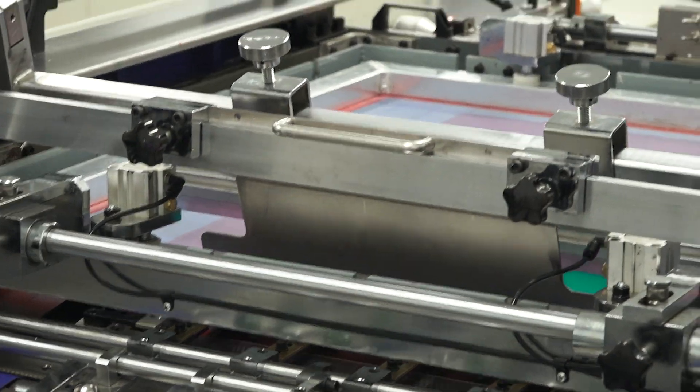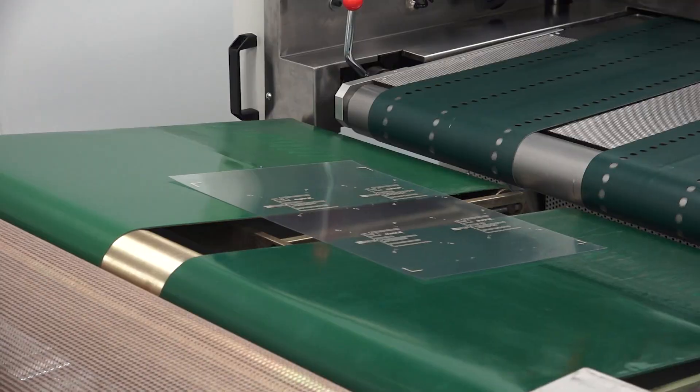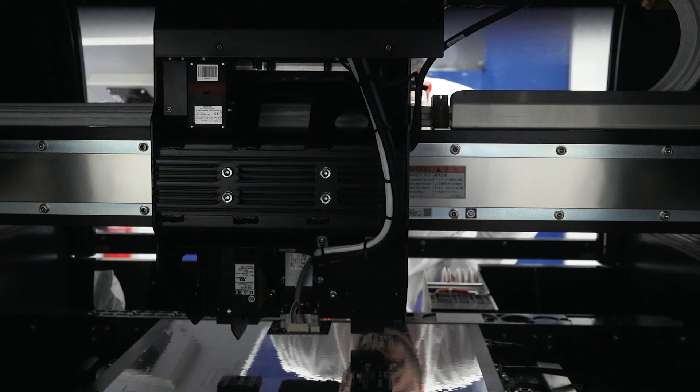The printing phase consists of the additive deposition of inks with electronic properties onto plastic substrates. The hybridization stage combines printed electronics with electronic components.